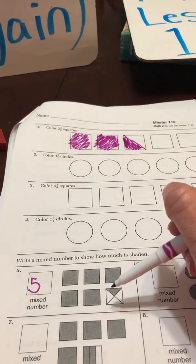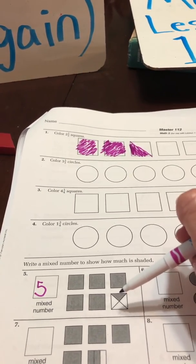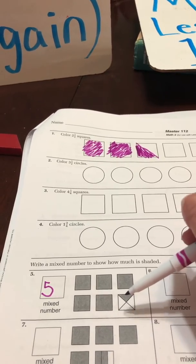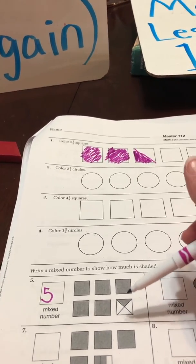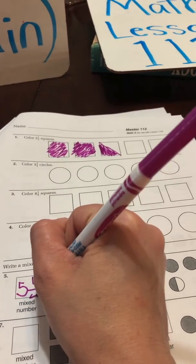Now this square has one piece shaded in, but one piece out of how many? One piece out of one, two, three, four. One out of four or one fourth.